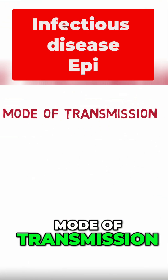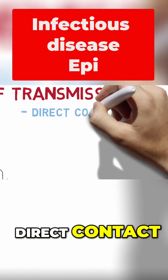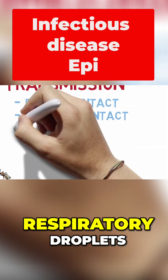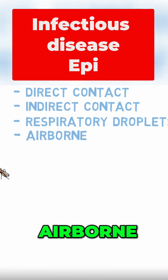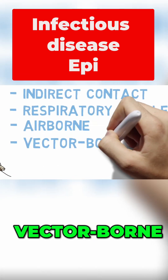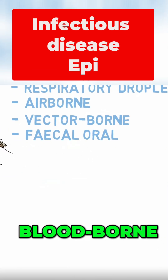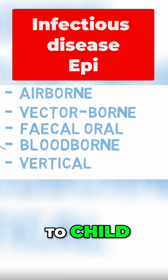Firstly, mode of transmission. This can be through direct contact, indirect contact, respiratory droplets, airborne, vector-borne, feco-oral, blood-borne, and vertical transmission, which is from mother to child.